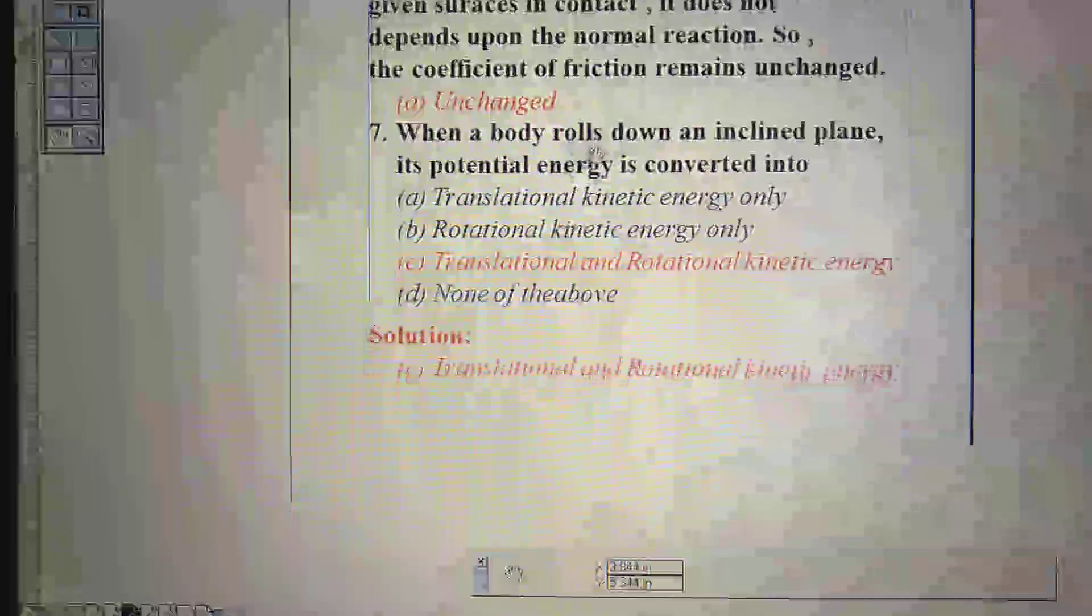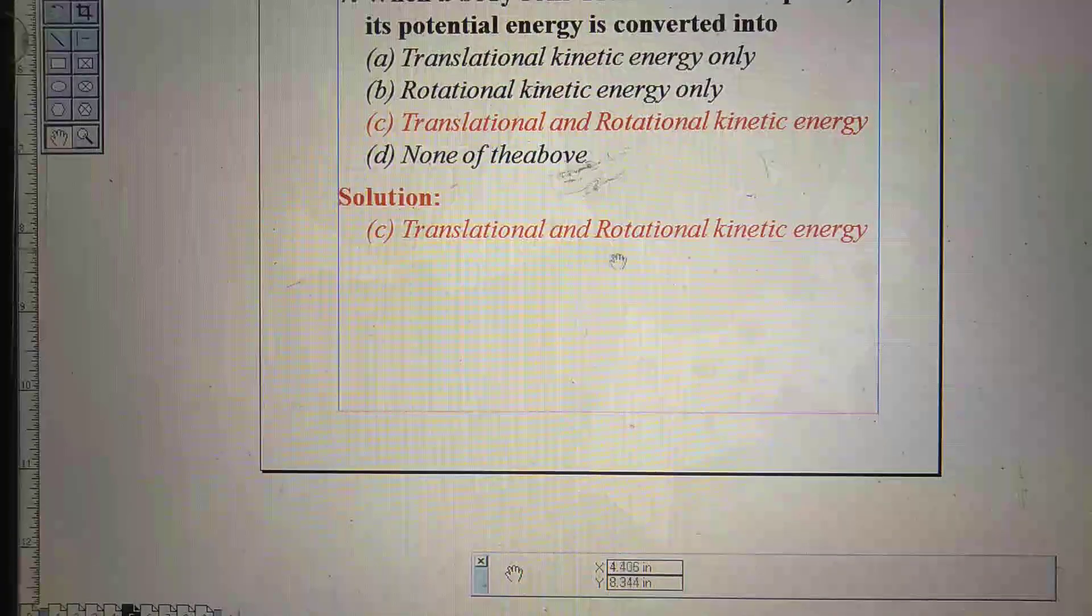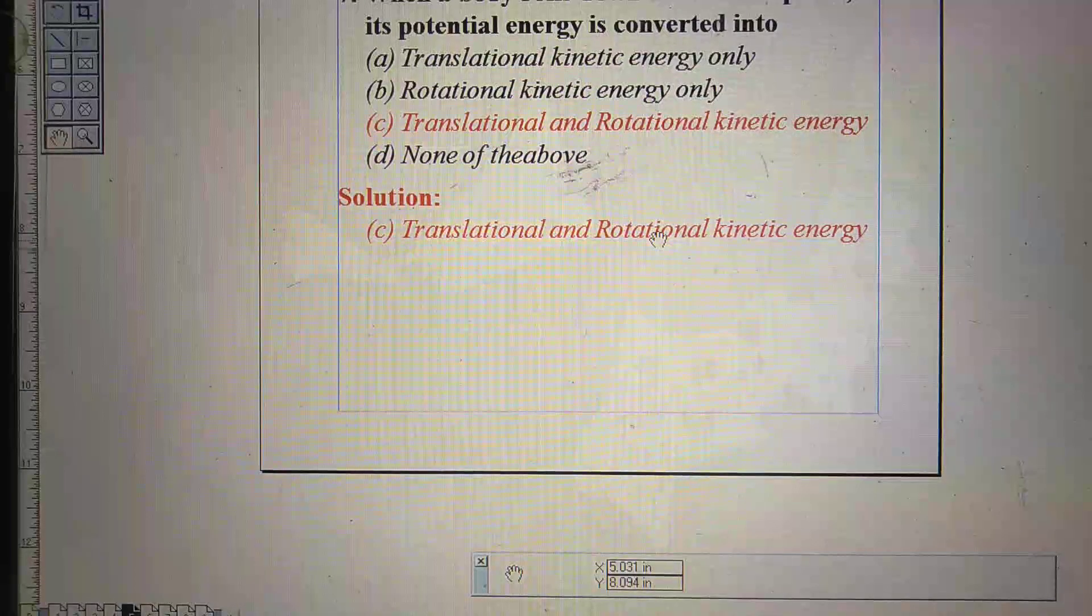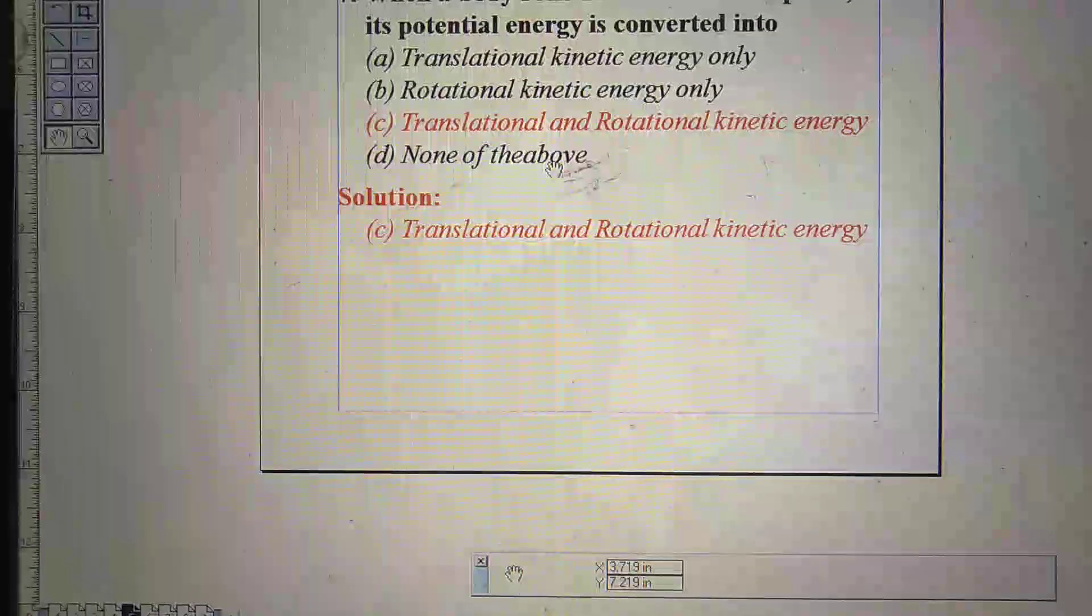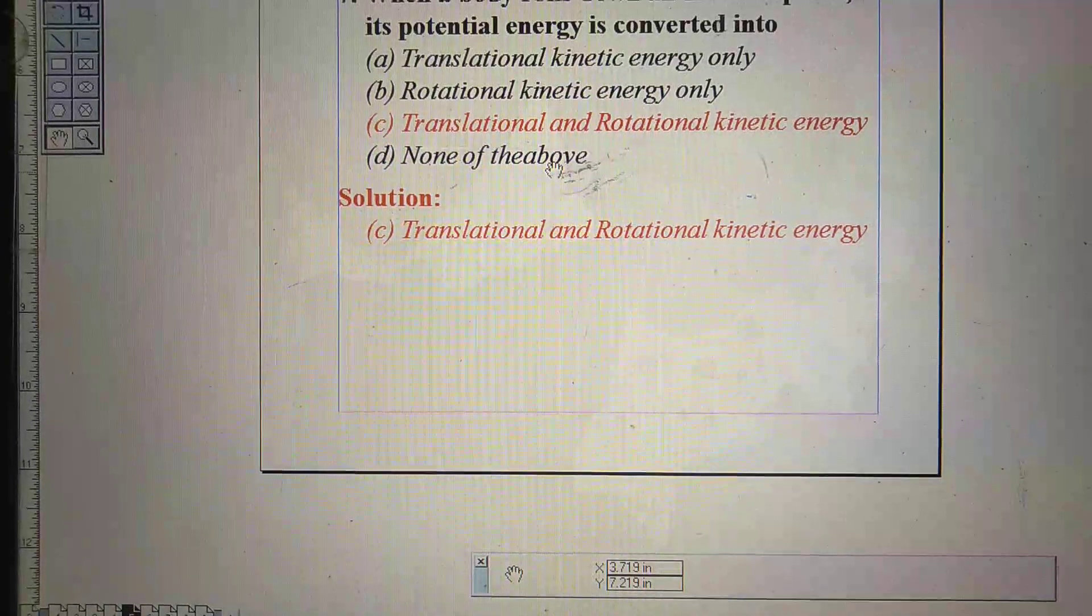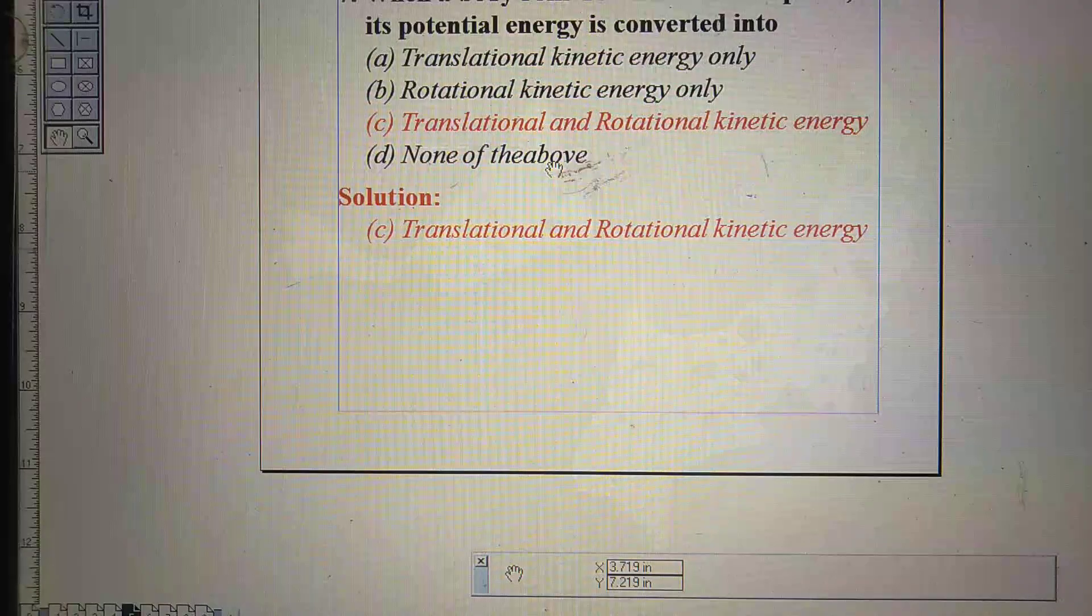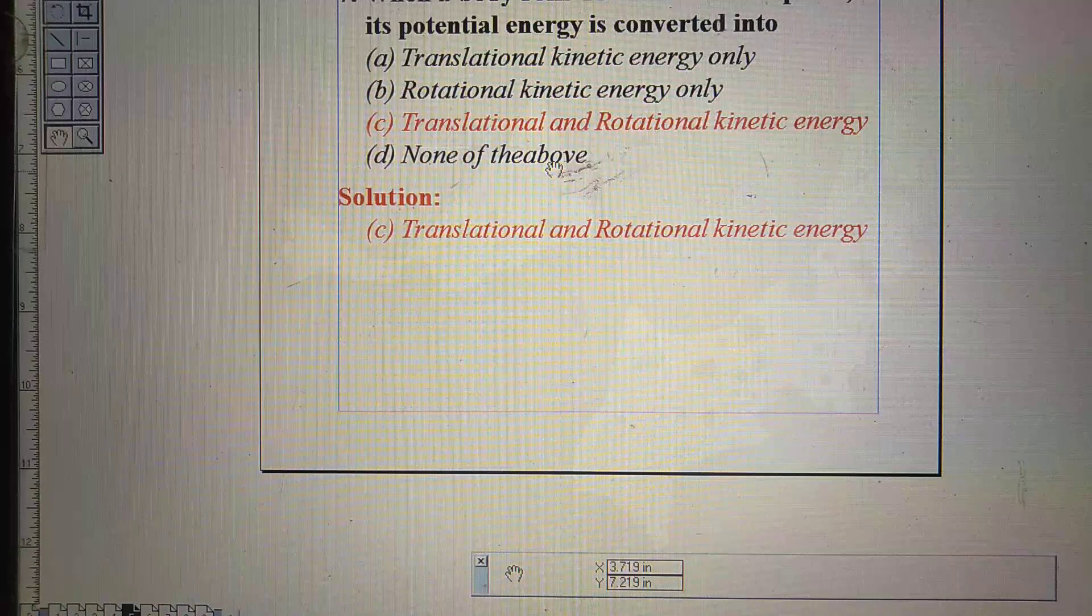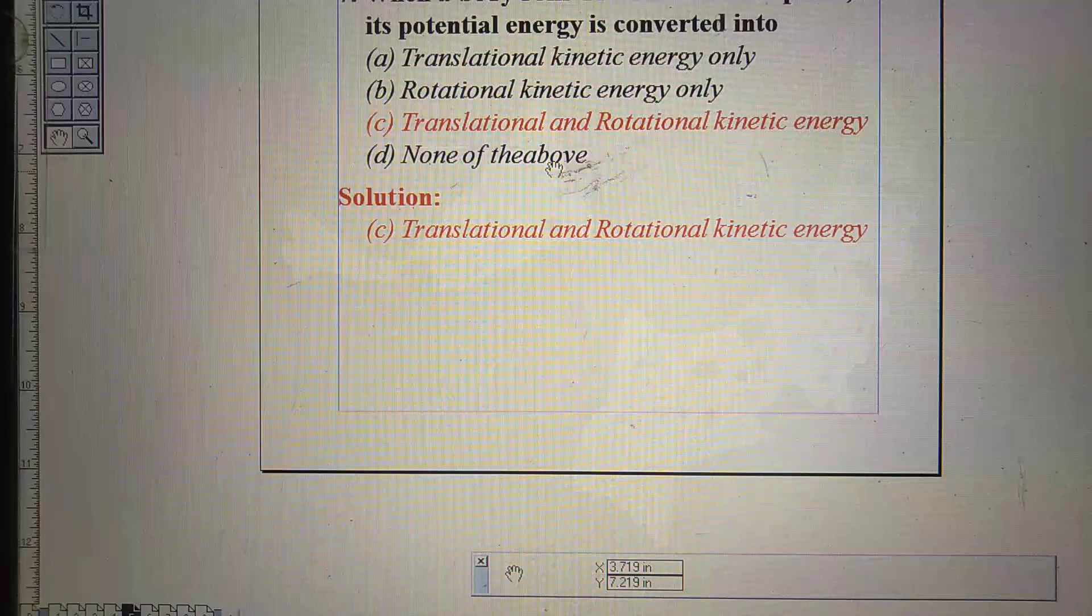The second question: when a body rolls down an inclined plane, its potential energy is converted into option A, translational kinetic energy only, B, rotational kinetic energy only, C, translational and rotational kinetic energy, D, none of the above.